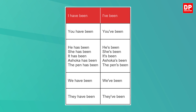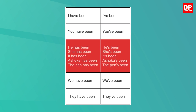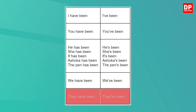'I have been' becomes 'I've been.' 'You have been' turns into 'you've been.' 'He has been' becomes 'he's been.' 'She has been' becomes 'she's been.' 'It has been' becomes 'it's been.' 'Ashoka has been' becomes 'Ashoka's been.' 'The pen has been' becomes 'the pen's been.' 'We have been' becomes 'we've been.' 'They have been' becomes 'they've been.'